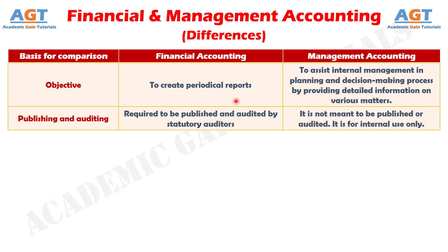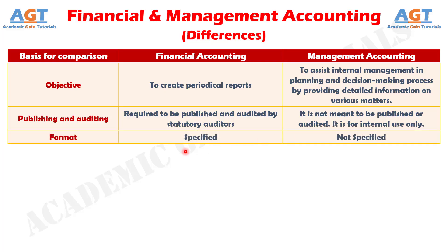Number nine: In Financial Accounting, it is required to be published and audited by statutory auditors, whereas in Management Accounting it is not meant to be published or audited — it is for internal use only. Difference number ten: The format for Financial Accounting is specified, whereas the format for Management Accounting is not specified.